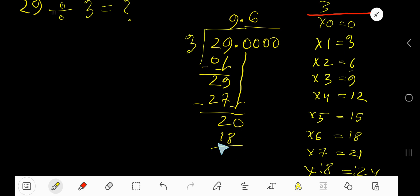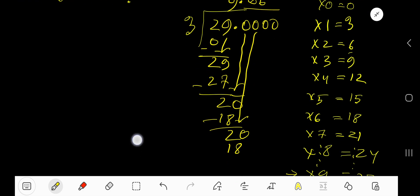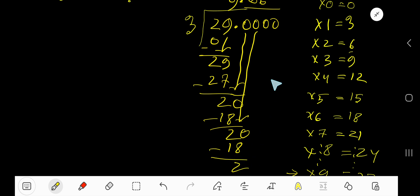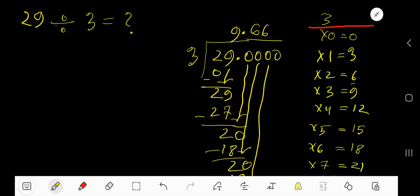Bring down the next 0. 3 goes into 20 again, 6 times. 6 times 3 is 18. Subtract 2. Bring down next 0. 3 goes into 20, again 6 times.